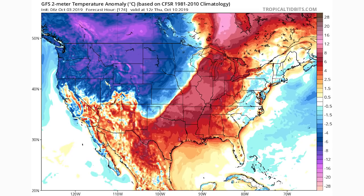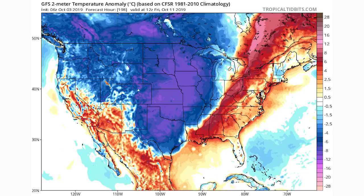The overall trend here is very flip-floppy conditions during the first half of October — cool down, warm-up, cool down, warm-up, cool down, warm-up. This happens when we have a very progressive pattern, meaning multiple troughs and ridges in the northern atmosphere moving quite fast. All you really need to know is that it's going to alternate between cool downs and warm-ups throughout this first half of October.